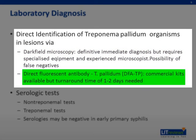On direct fluorescent antibody testing, one looks for Treponema pallidum in direct lesion smears by immunofluorescence. The advantages are that the test is commercially available and it compares favorably with dark field microscopy. The disadvantage is that there is a turnaround time of one to two days.